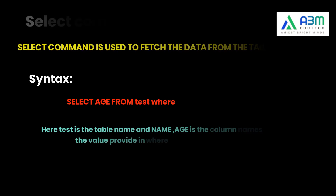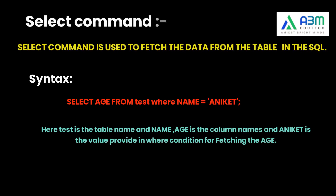We have seen INSERT, UPDATE, DELETE. Now we will learn how to fetch data from the table. For that, the SELECT command is used. It is used to select attributes based on the condition described by the WHERE clause. For example, from the table test, to select the age of a person named ABC: SELECT age FROM test WHERE name = ABC.